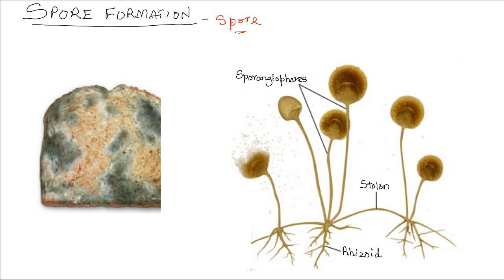Spores are produced in large numbers to increase the chances of landing on a surface favorable for germination. Spore formation occurs in organisms such as bacteria, protozoa, algae, mosses, ferns, and fungi. Now we look at spore formation in Rhizopus, also known as mold.